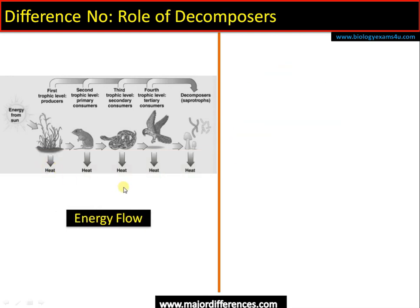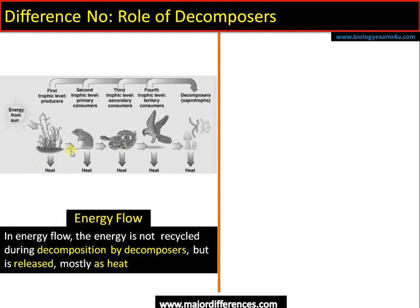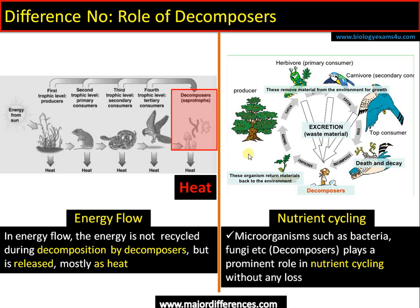Difference number four regards the role of decomposers. In the case of energy flow, energy is not recycled during decomposition by decomposers — the majority of energy is lost as heat, which is why there is much heat generation during compost preparation by microorganisms. In all nutrient cycles, these microorganisms play a crucial role in cycling nutrients back to the atmosphere or back to the reservoir pool. That's the difference between energy flow and nutrient cycling. Hope things are clear — you are with BiologyExams4U.com. Thank you so much for your support.